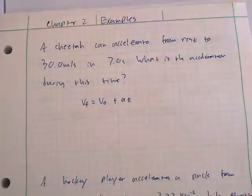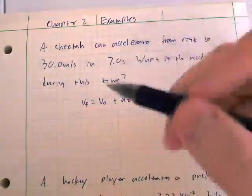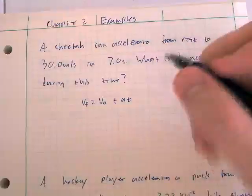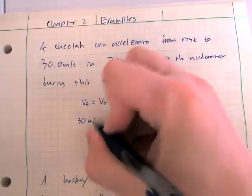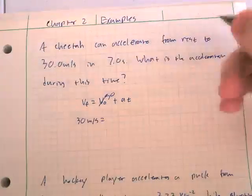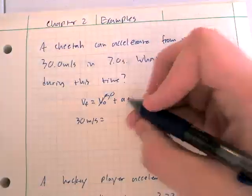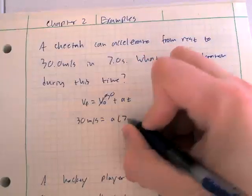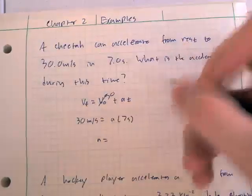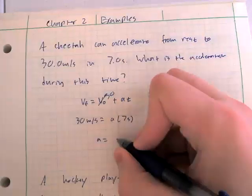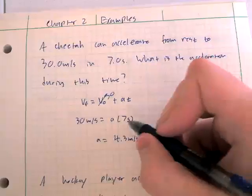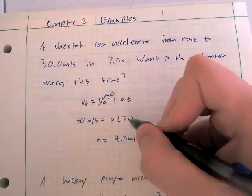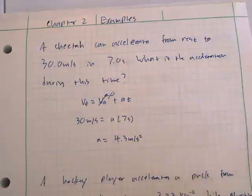In this case no directions are specified, so we make everything positive — it starts at rest and accelerates in the positive direction. So v_final is 30 m/s, v_initial is zero (starting from rest), and t is 7 seconds. Dividing 30 meters per second by 7 gives an acceleration of about 4.3 meters per second squared. Checking units: meters per second divided by seconds gives meters per second squared, which is correct for acceleration.